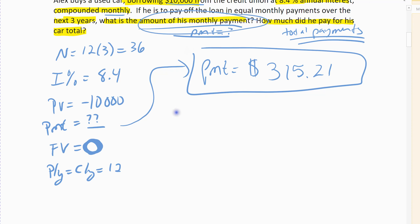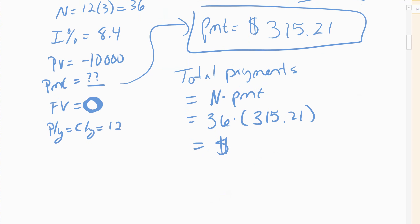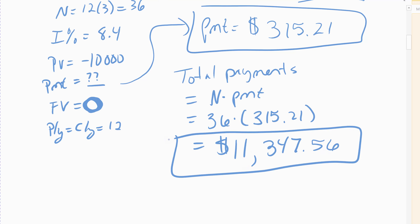So what are our payments? Monthly payments for the loan come out to be $315.21, which is what he has to pay the bank back, and it's a fairly high amount because he's paying it off in three years - he's going to pay it off very quickly. Now the second part of the question is: what are his total payments? It should be a little bigger than $10,000. That would be the number of payments times the payment amount: 36 times $315.21. The total amount he ended up paying for his car is $11,347.56. He borrowed $10,000, so his interest is $1,347.56 - not too bad, even though he has a high interest rate, because he's paying it off fairly quickly.